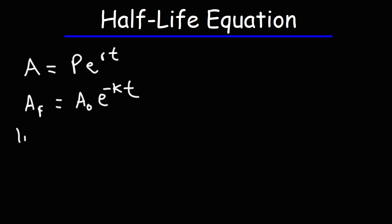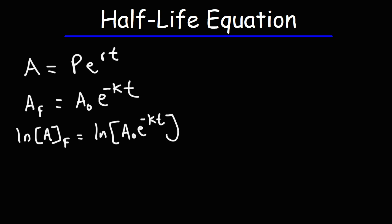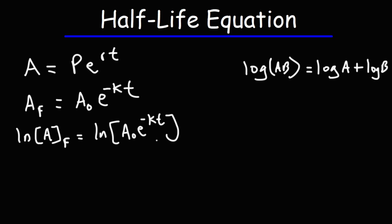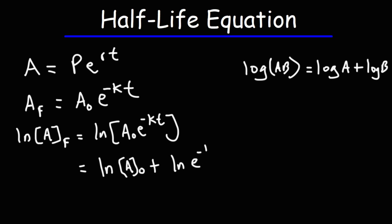The next thing we're going to do is take the natural log of both sides. So we're going to have LN of A final is equal to LN of A initial times E raised to the negative KT. A property of logs allows us to take one log and split it into two — for instance, log(A times B) can be expanded as log A plus log B. In this case, we're going to separate A initial from E to the negative KT, writing it as LN(A initial) plus LN(E raised to the negative KT).